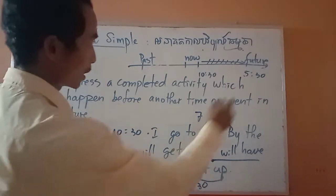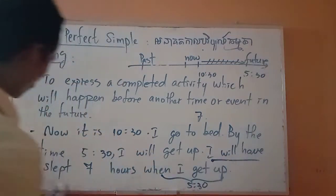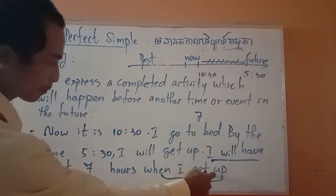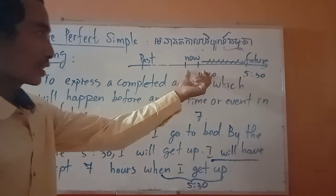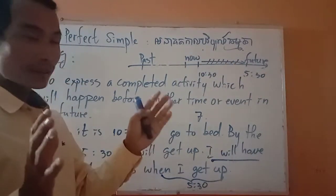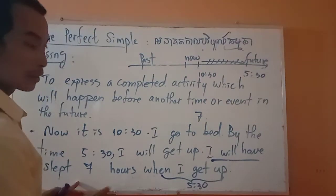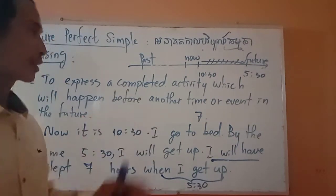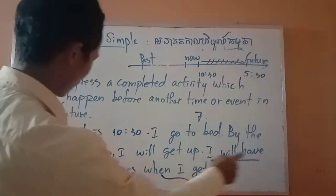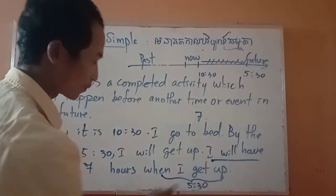We will get up at 5:30. So I will have slept 7 hours when I get up. I go to bed here and I get up here, so I will have slept 7 hours when I get up.